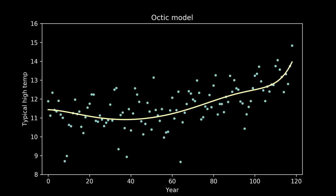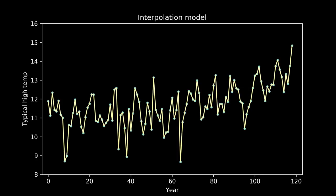Now the fit appears to be getting better, but the line is taking on extra personality. It's adopting some wiggles. If we take this to an extreme, we can imagine a model that passes through every single data point perfectly. This model would have zero error, zero deviation from our measured data. So does that make it the best fit model?